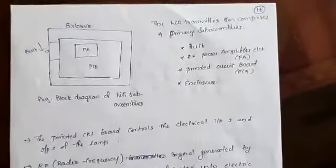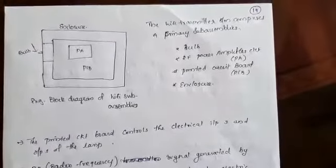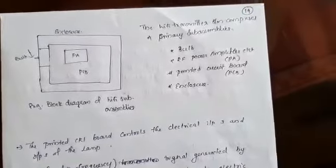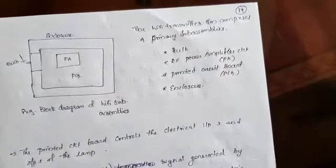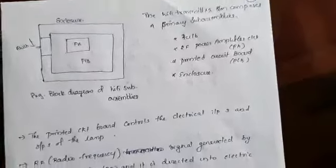The Li-Fi transmitter system comprises four primary sub-assemblies: bulb, RF power amplifier, printed circuit board, and last one enclosure.